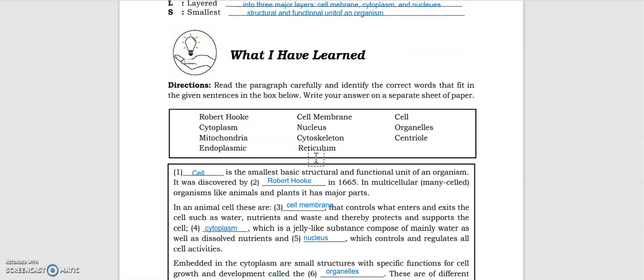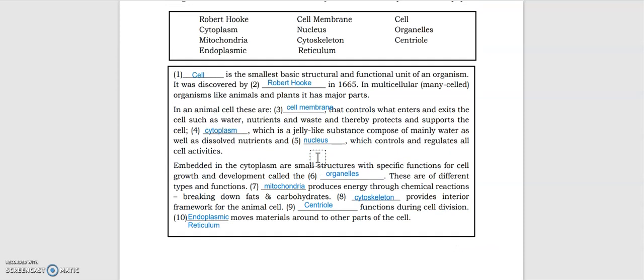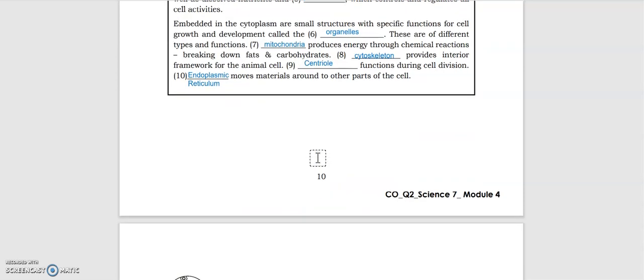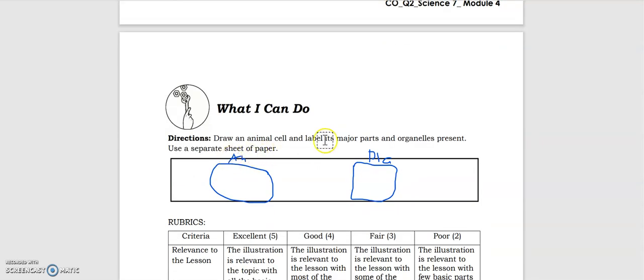For the plant cells, we'll do it in part two. For the What I Can Do portion, you draw the animal cell and the plant cells. For the animal cells, it's basically circular. Then for the plant cells, it's basically rectangular. Just do the labeling of the different parts of its organelles. We have the rubrics here.